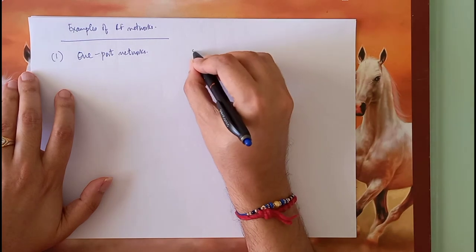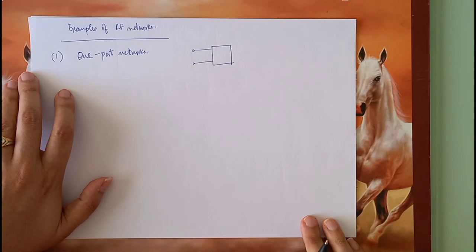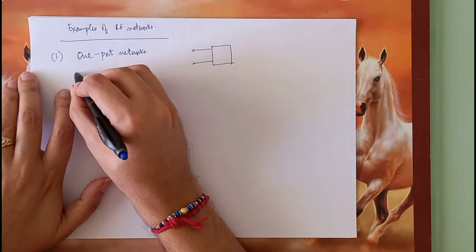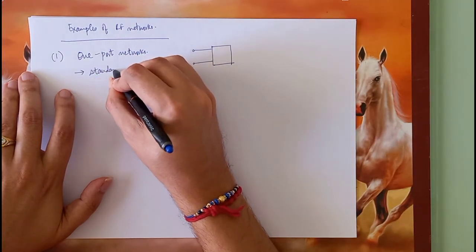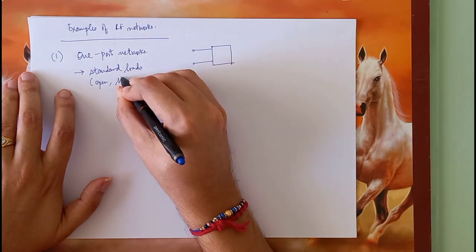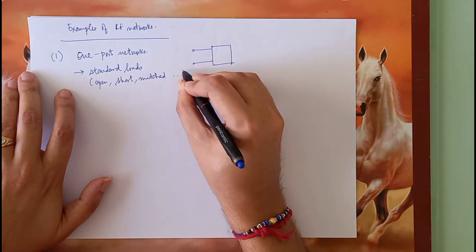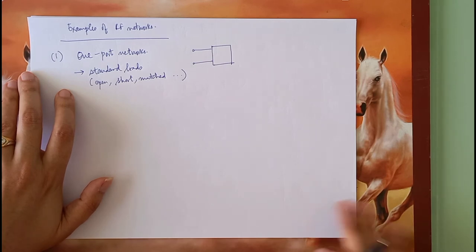These kind of networks are one-port networks and examples include standard loads like open load, short load, match load, etc. There can also be loads which are inductive, capacitive, or resistive with a certain value. So these are all part of one-port networks.